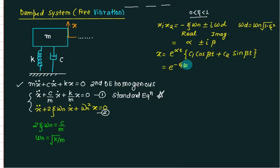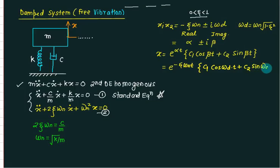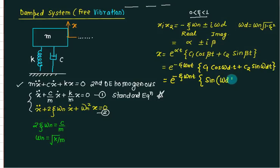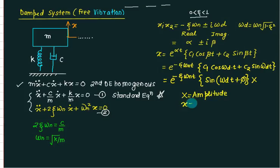The equation can be written as e to the power minus zeta omega n times t, into sine of omega d times t plus phi. One constant will be written as capital X. This constant takes care of c1 and c2. Capital X is called as amplitude and x is called as displacement.